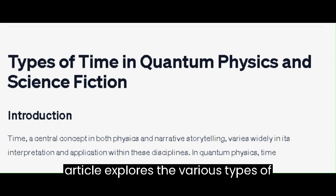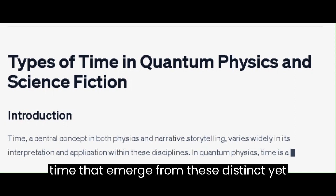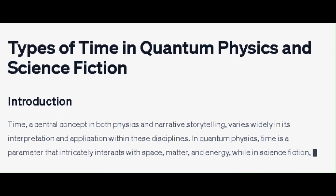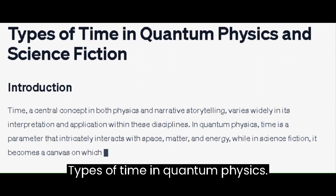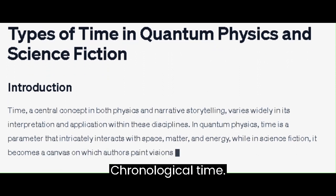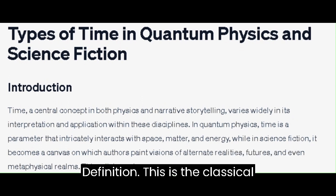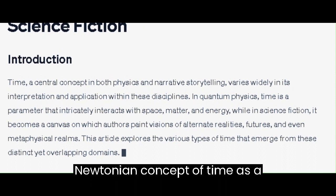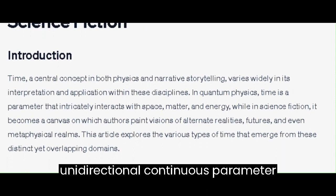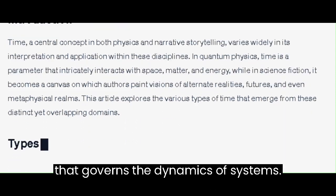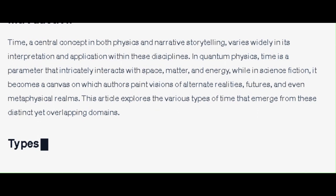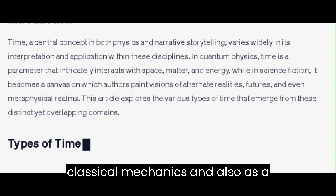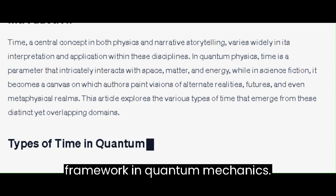This article explores the various types of time that emerge from these distinct yet overlapping domains. Types of Time in Quantum Physics: Chronological Time - this is the classical Newtonian concept of time as a unidirectional, continuous parameter that governs the dynamics of systems. Applications: used in most classical mechanics and also as a framework in quantum mechanics.